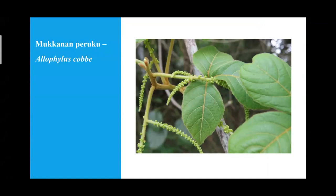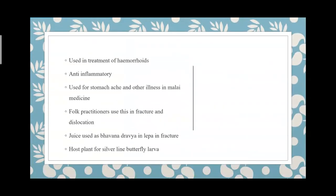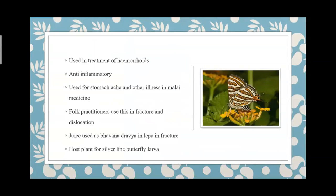These plants produce beautiful berries which attract many birds. It is a good host for a special butterfly called the silver line butterfly — the larva feeds on its leaves. The leaf juice is very slimy and is used as a Bhavana dravya for triturating in different kinds of fracture illness formulations.